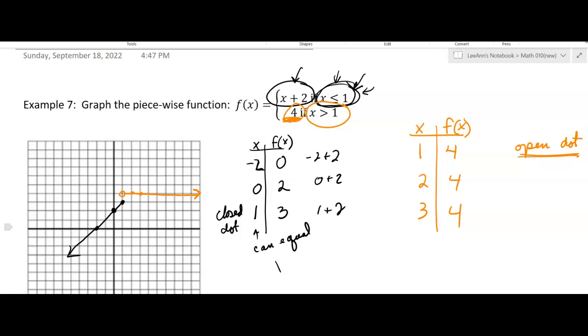It's really important that we do the open dot and the closed dot correctly. By the way, this covers all real numbers because our domain was all real numbers. Anything less than or equal to 1, anything greater than 1, that's all real numbers. I can't fill in the dot here. It can't be a closed dot because then it wouldn't pass the vertical line test. It wouldn't be a function.